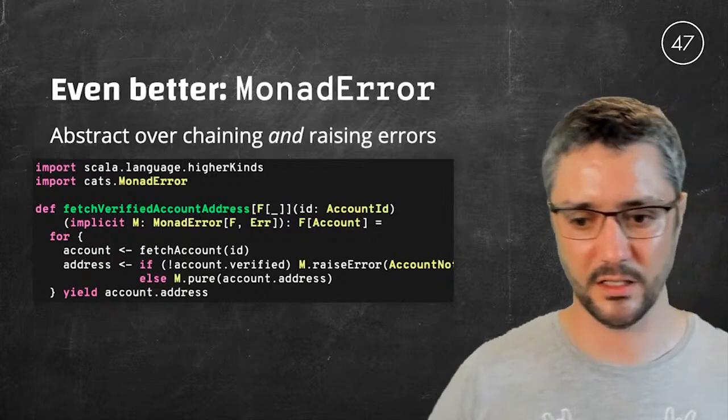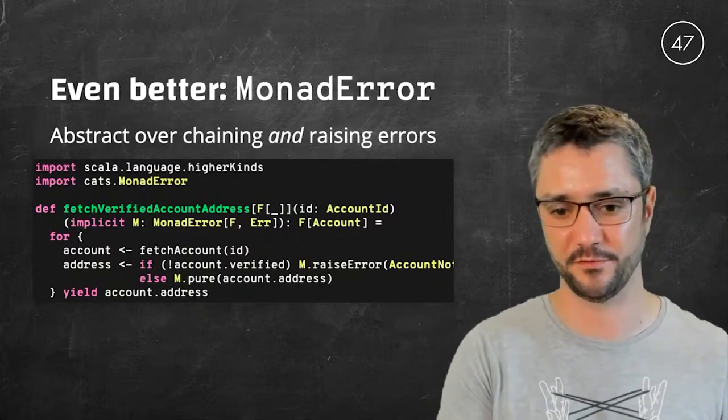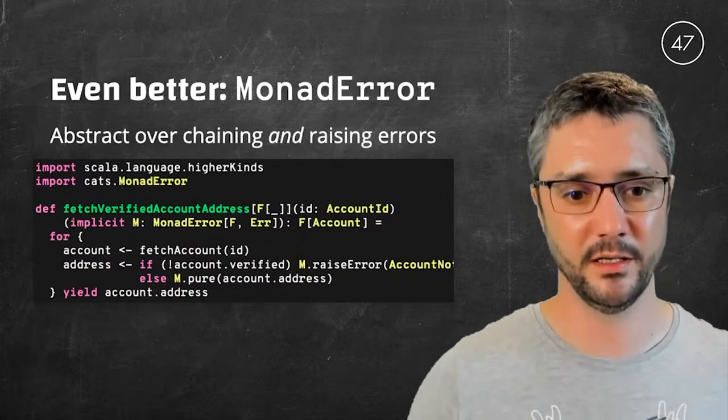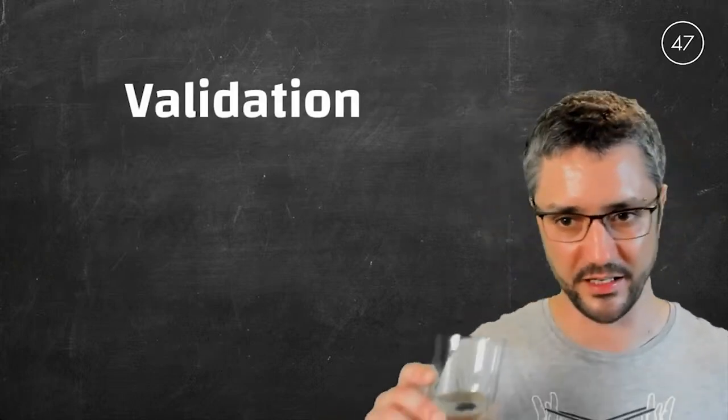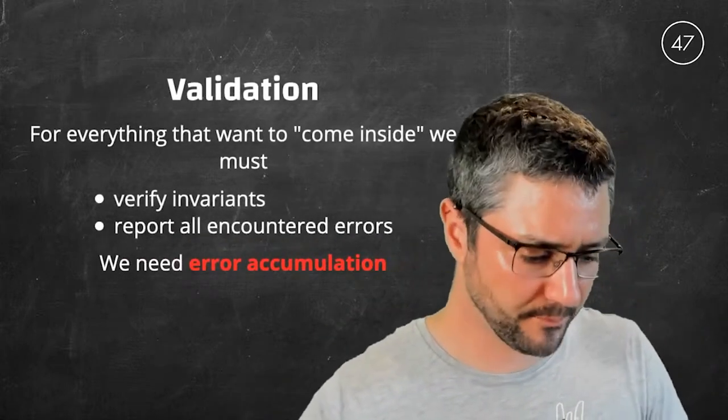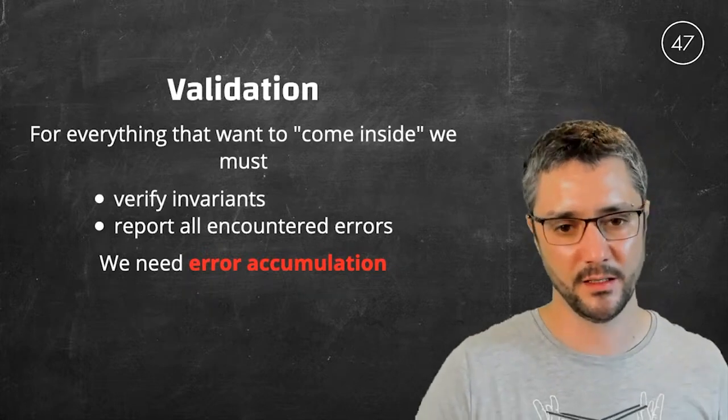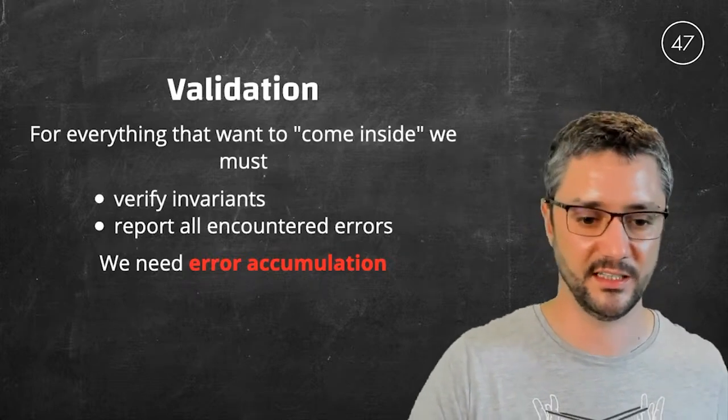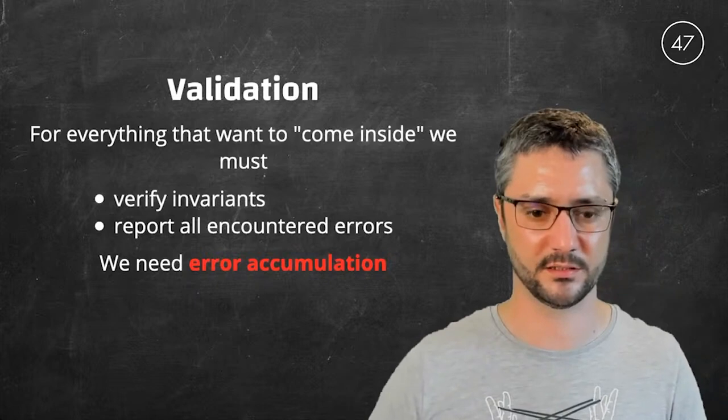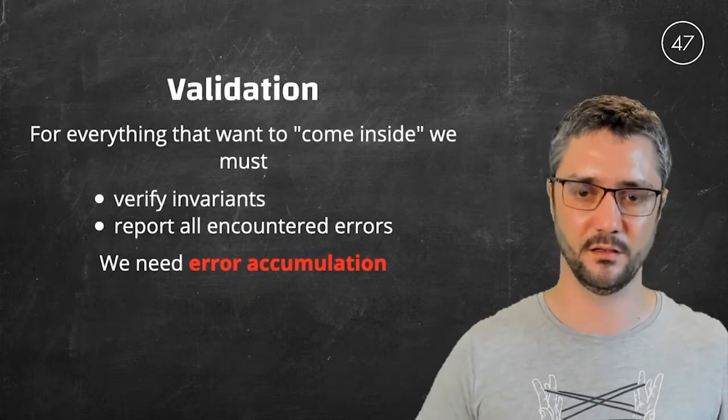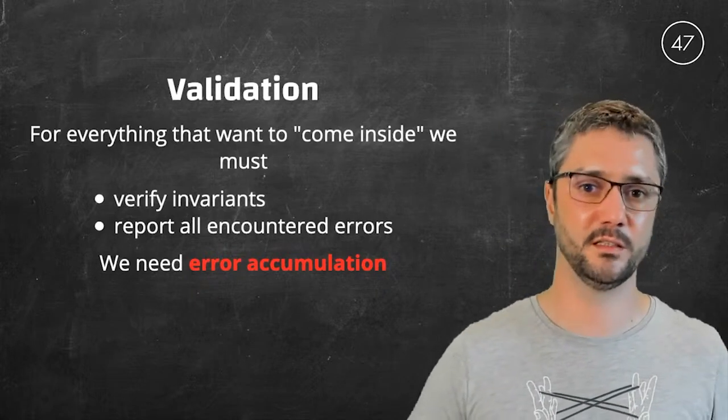So that was it about error handling. The takeaway is to always wrap function results that may fail into an error advertising type. And it gave you a few tips on how to combine these contexts. So now let's talk a little bit about validation. So as we said at the beginning, validation must be applied to everything that wants to come inside our application. That is user inputs, but also configurations or messages sent by other applications, or even messages that we had serialized into a database or stuff like that.